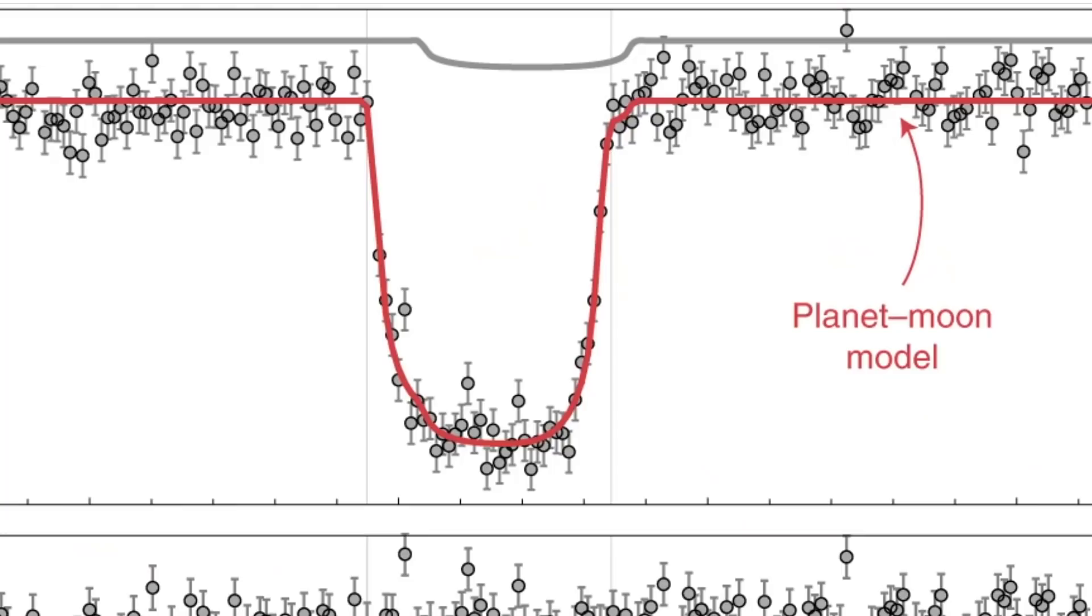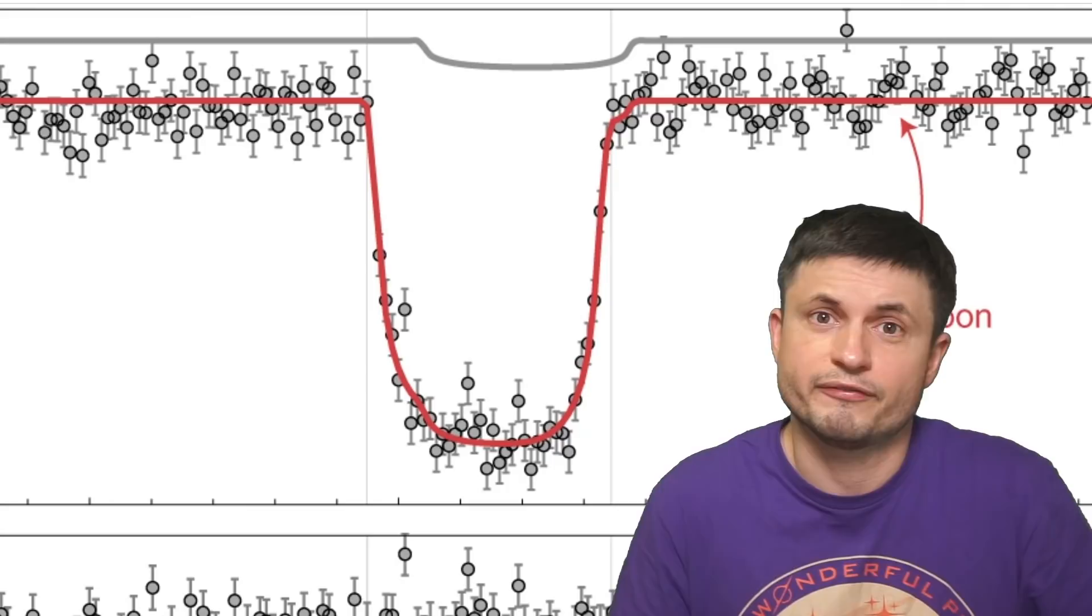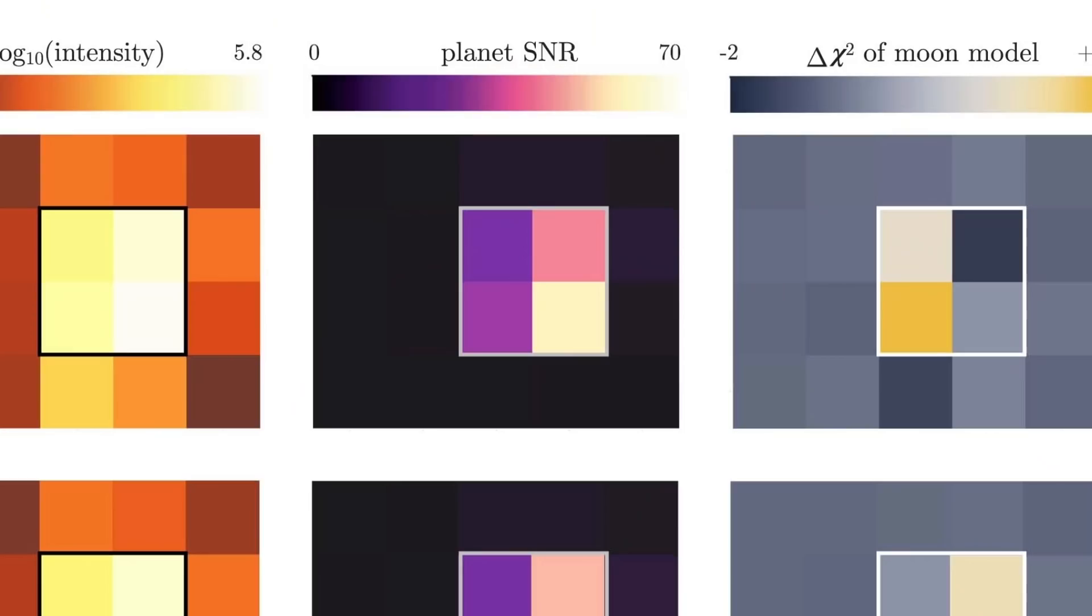And well, the preliminary data here suggests that there is something going on. But because this is about 5500 light years away from us, so basically really really far, and because once again we're just dealing with a few pixels captured by the Kepler telescope,